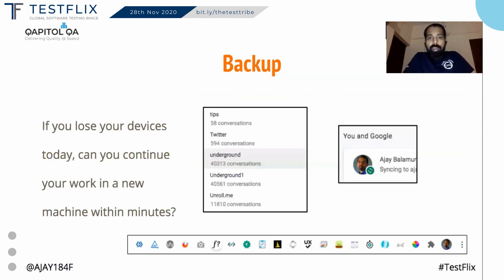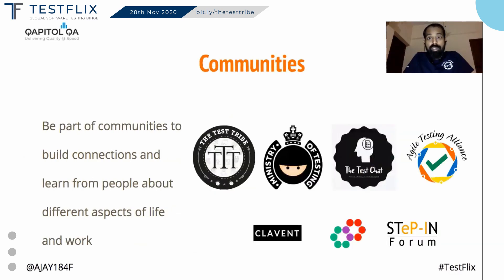B for Backup. Many testers don't take backups and then take days and weeks to get back to their original speed. Don't be one of those testers. C for Communities — there are multiple communities you can take help from, be part of, learn from, and share your knowledge with. Hunt for those.